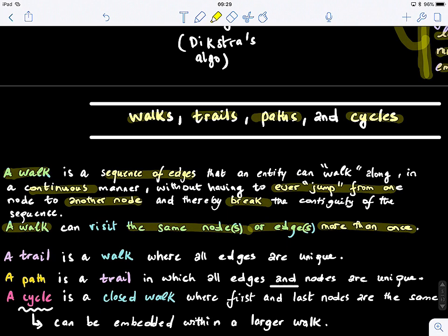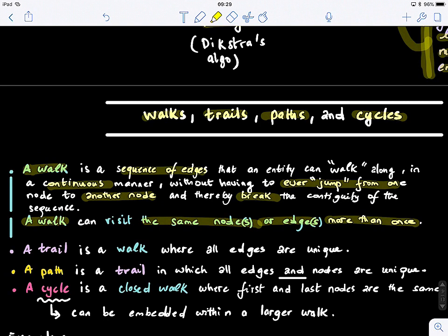Now, for a trail, a trail is a walk where all edges are unique. You cannot visit the same edge twice when you have a trail. You can visit a node twice, but not an edge. So this is the definition of a trail.